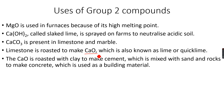Calcium oxide, also known as lime or quicklime, is roasted with clay to make cement, which is further mixed with sand and rocks to make concrete. Concrete is used to make all our building foundations and buildings, so calcium oxide is a very useful compound.